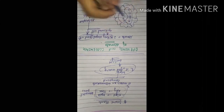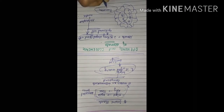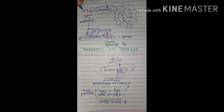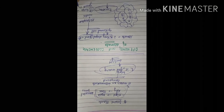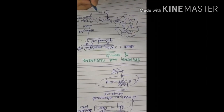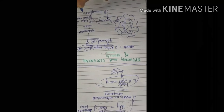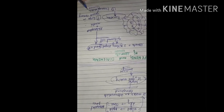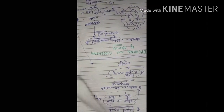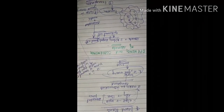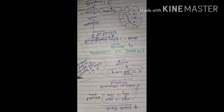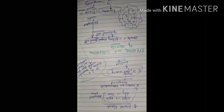Most importantly, what are the functions of stomata? The first function is that it helps in gaseous exchange. The second function is that it helps in transpiration. Transpiration is the process of removal of water from the plant body in the form of water vapor.